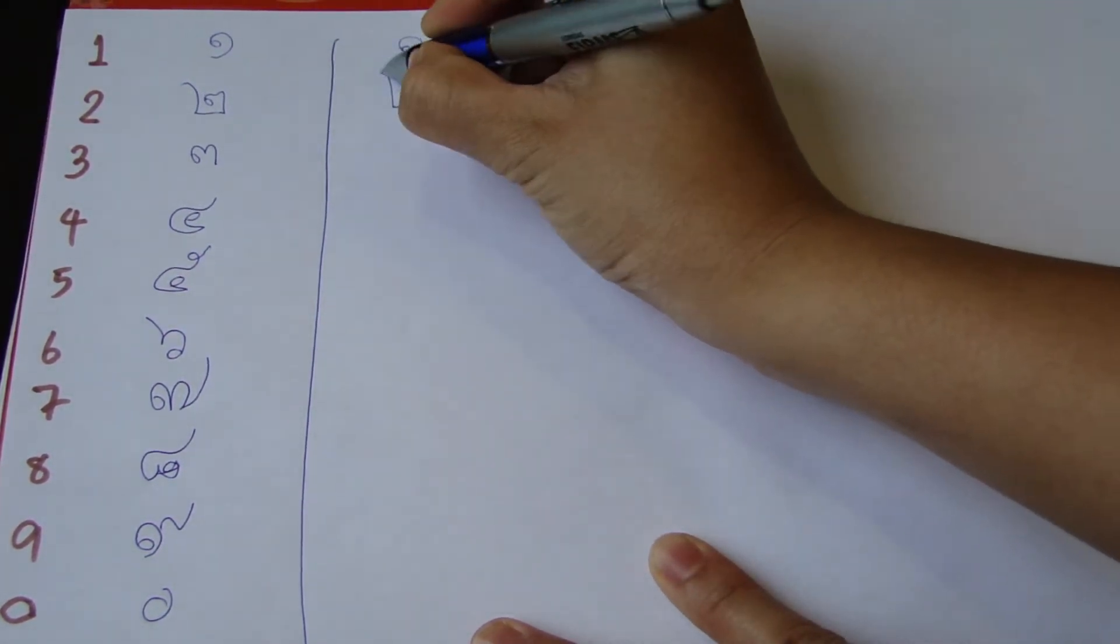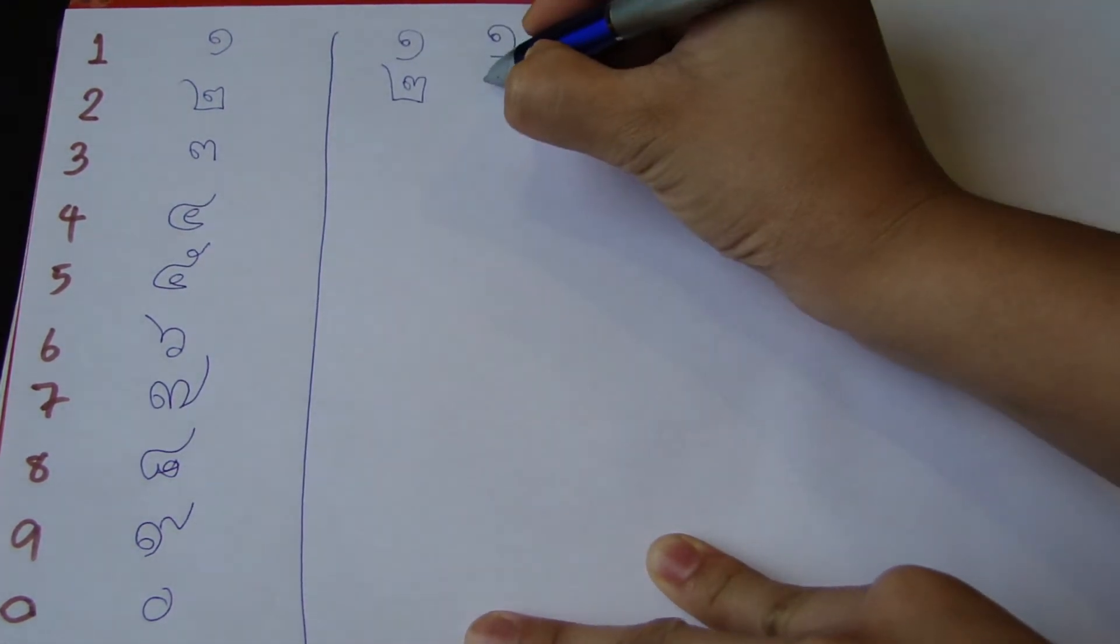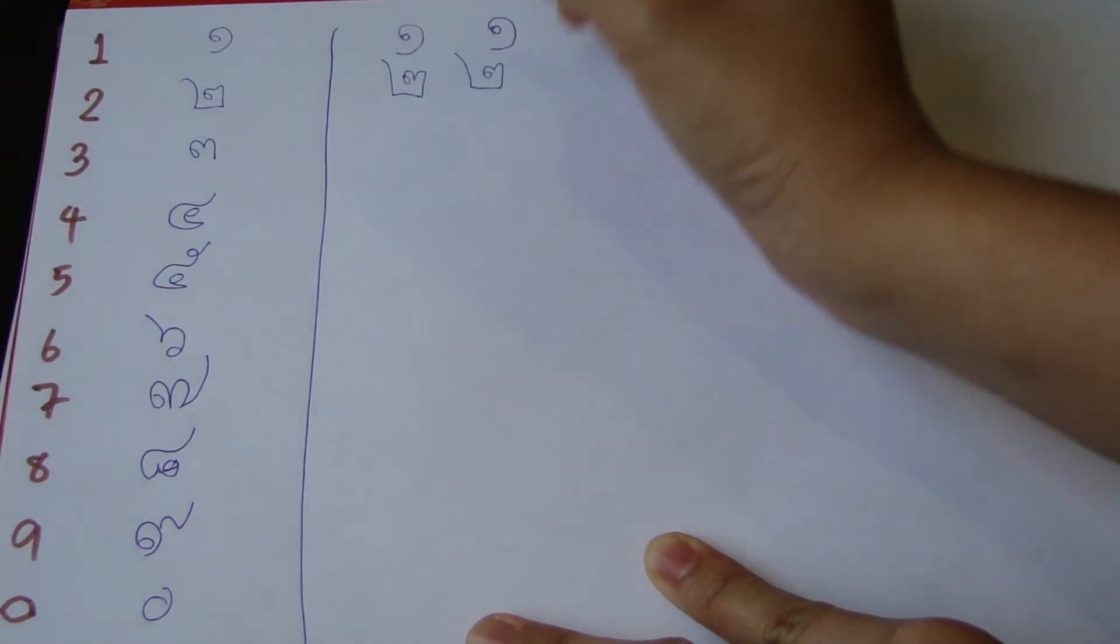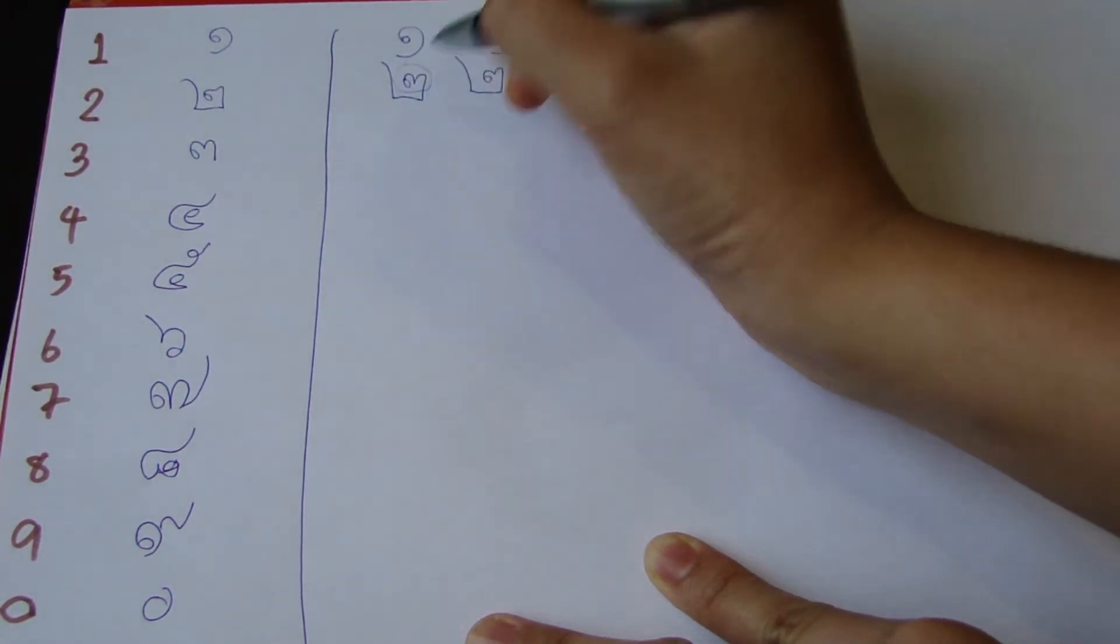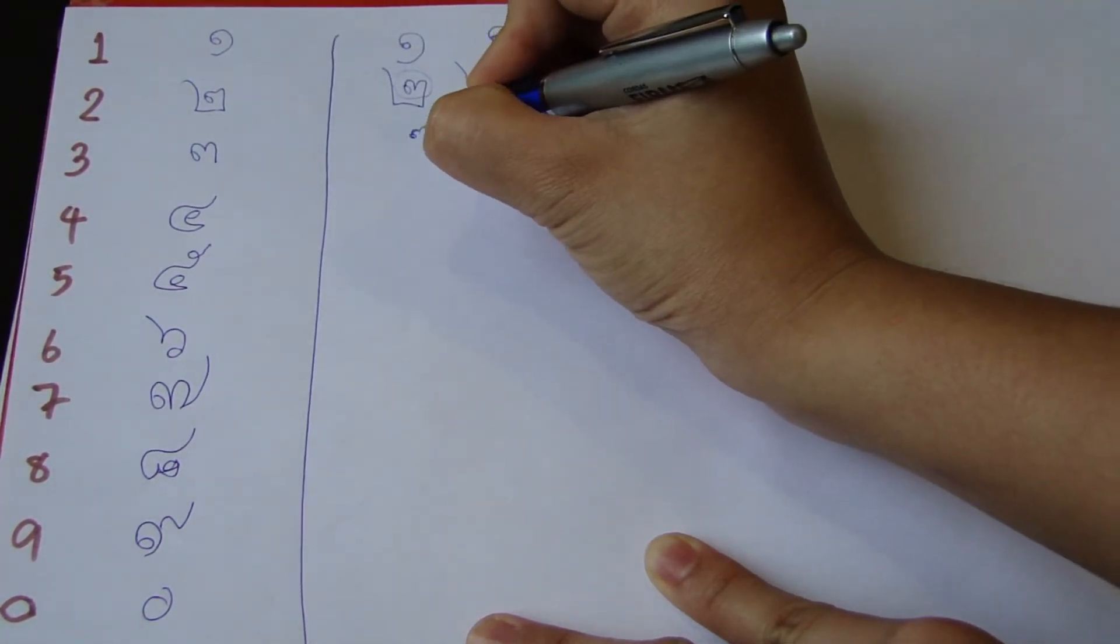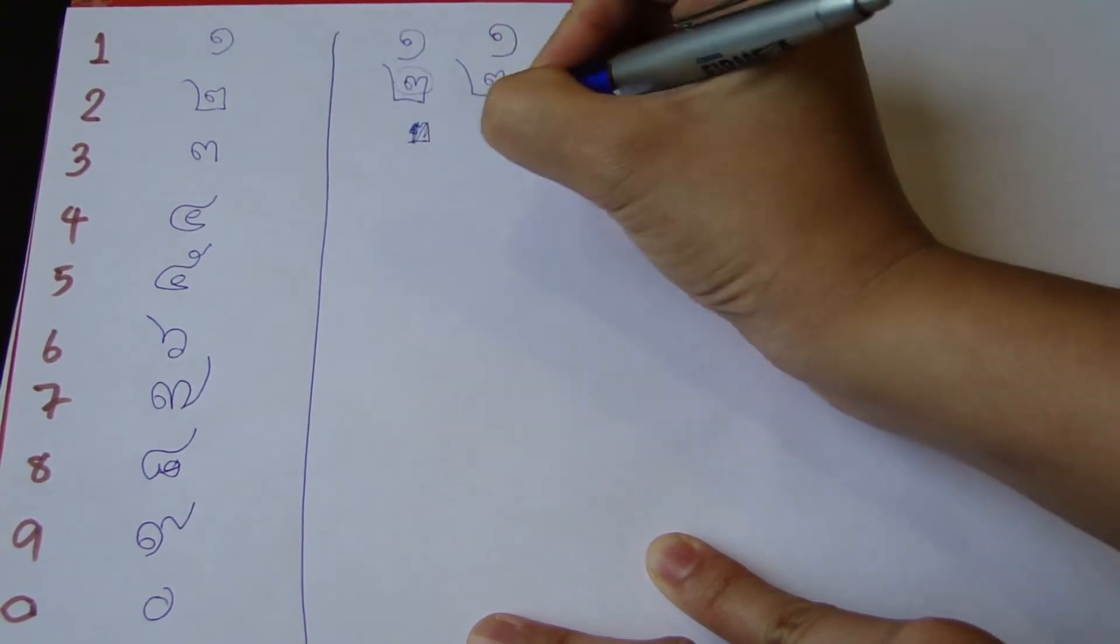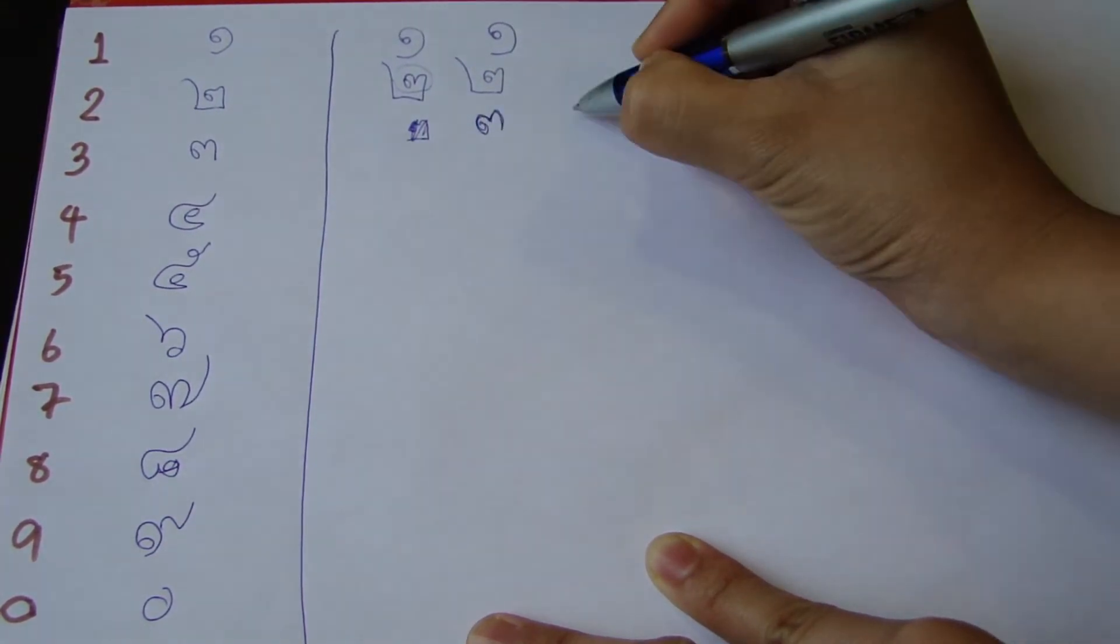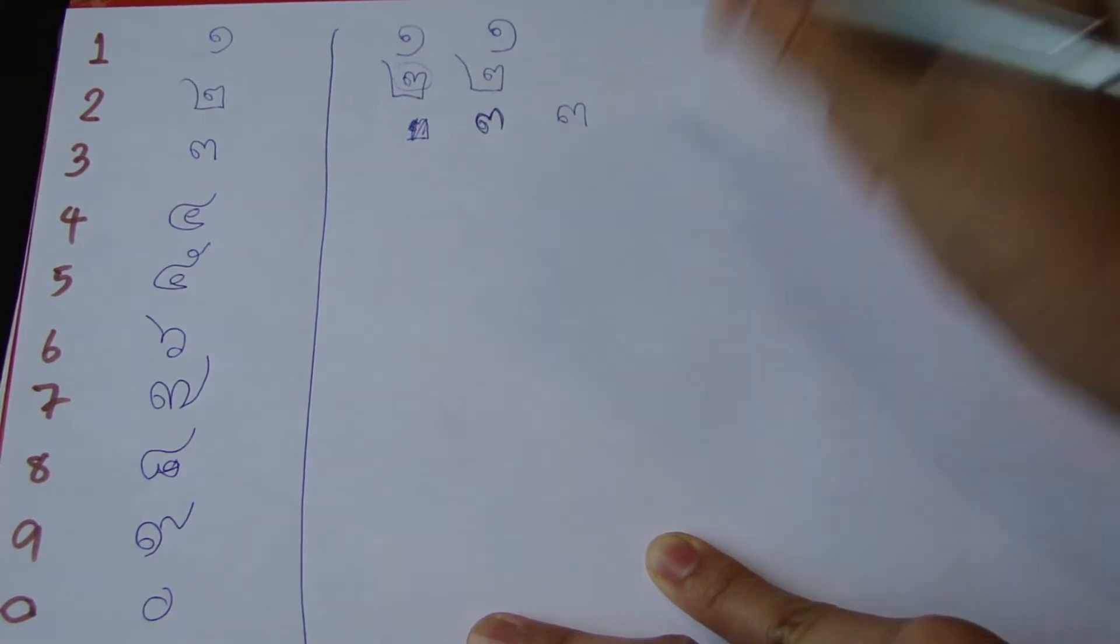Number 2. It's easy, right? Number 2. Number 3. Number 3, it looks just like this. Looks just like the head of number 2. Yeah, like this. Again, like this. Number 3.